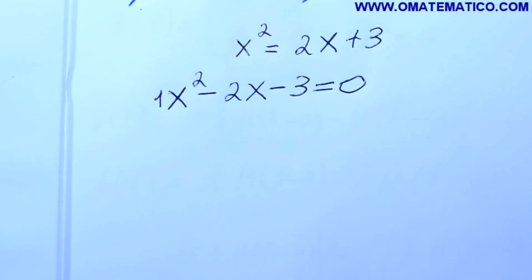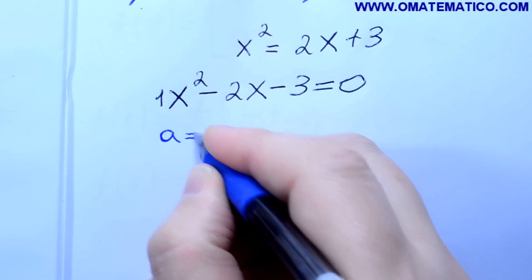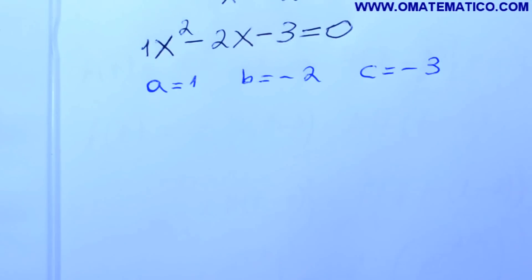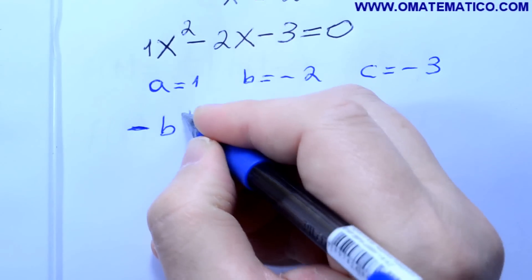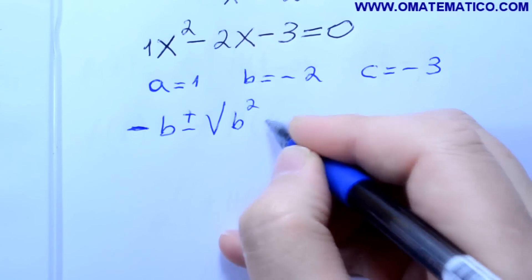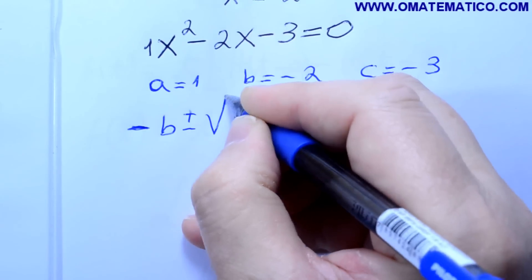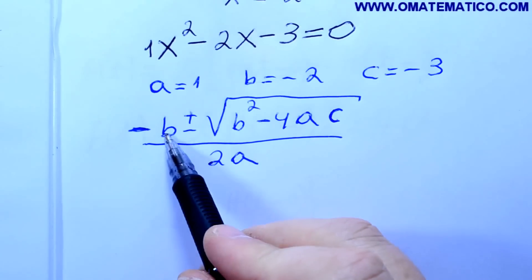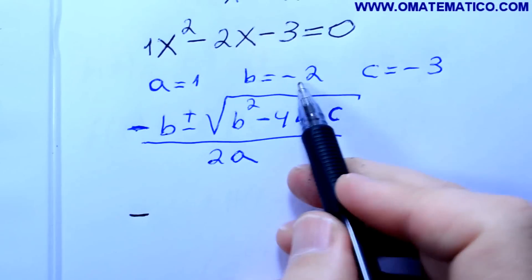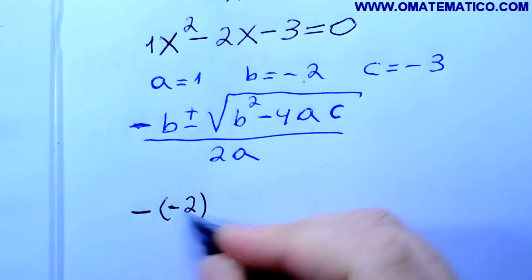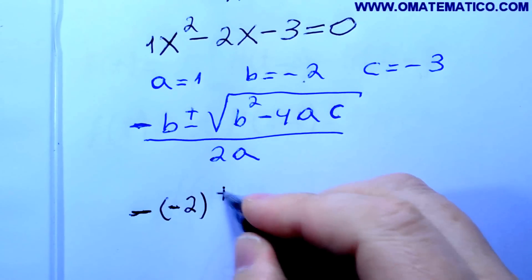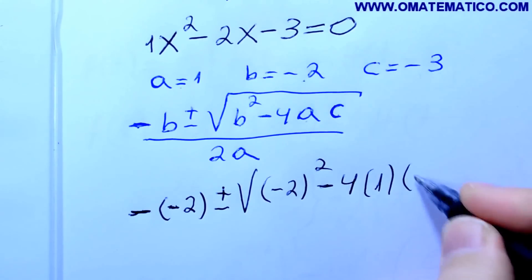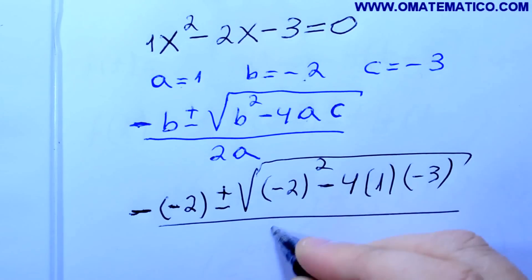Parece que a gente tem que usar Bhaskara. Aqui na frente tem o número 1, então: A é 1, B é menos 2, e C igual a menos 3. A formulazinha de Bhaskara: menos B, mais ou menos raiz de B quadrado, menos 4 vezes A vezes C, sobre 2A. Substituindo cada letrinha no seu lugar: o B tem o menos na frente, preserva o menos, e o B é menos 2, então fica menos 2. Mais ou menos raiz de menos 2 ao quadrado, menos o 4 vezes 1, vezes o menos 3. Tudo isso dividido por 2 vezes 1.